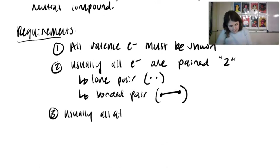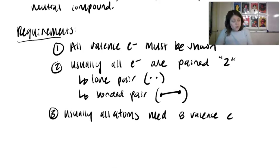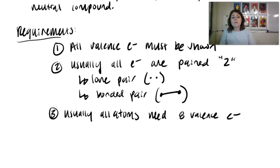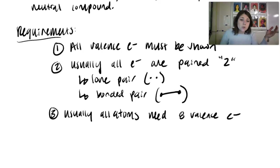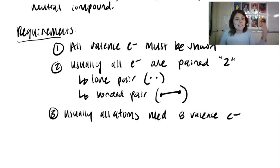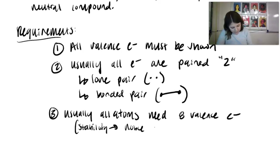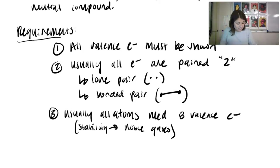Requirement three: usually, all atoms need eight valence electrons. Think about ions — for example, group 17 elements have seven valence electrons and just need one more to reach eight and be stable like the noble gases. We're looking for stability like noble gases, and this number eight is called the octet rule.